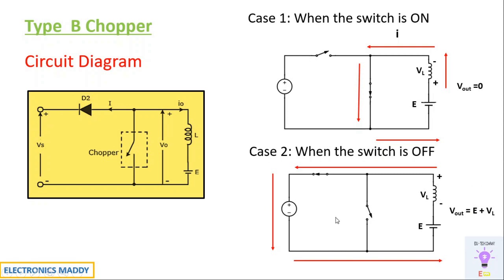The value of E plus VL will be much greater than Vs, so this is a boost mode of operation — the voltage at the load terminals is much greater than at the supply terminals. Comparing the two cases: Vout is zero in case one and positive in case two. But in both cases, current is flowing from the load back toward the source, which is opposite to the conventional direction, so current I is always negative.